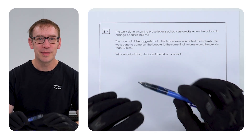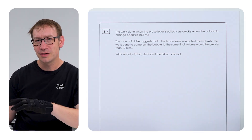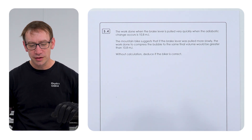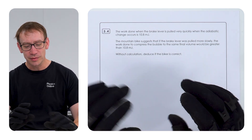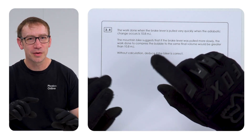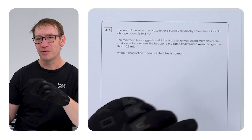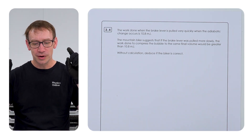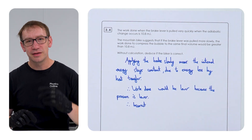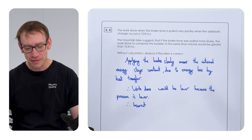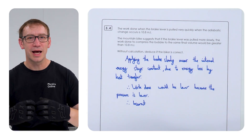The last question in this set is an AO3 question about interpreting data. It states that when the brakes are pulled quickly, with an adiabatic change, the work done is 10.8 millijoules. But if the brake lever was pulled more slowly, the work done to compress the bubble to the same volume would be greater than 10.8 millijoules — are they correct? My answer: applying the brake more slowly means the internal energy stays constant because energy is lost due to heat transfer, so the work done would actually be lower due to lower pressure, and therefore the cyclist is incorrect.